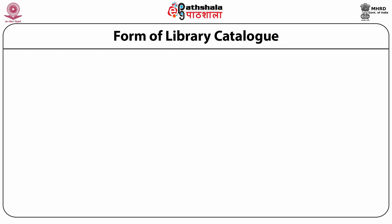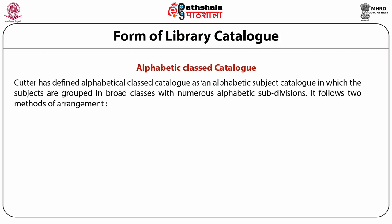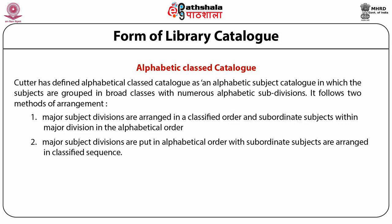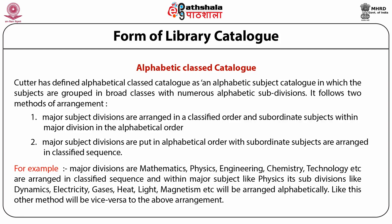The third type of inner form is the alphabetical class catalog. Petter has defined it as an alphabetic subject catalog in which the subjects are grouped in broad classes with enormous alphabetic subdivisions. It may also include author and title entries in the same alphabet. It follows two methods of arrangement: first, major subject divisions are arranged in classified order and subordinate subjects within each major division in alphabetical order; second, major subdivisions are in alphabetical order with subordinate subjects in classified sequence. This form achieves the combined advantages of both alphabetic and classified catalogs.